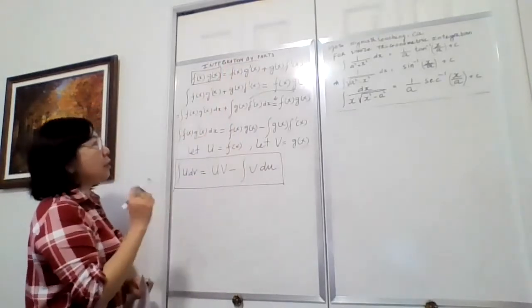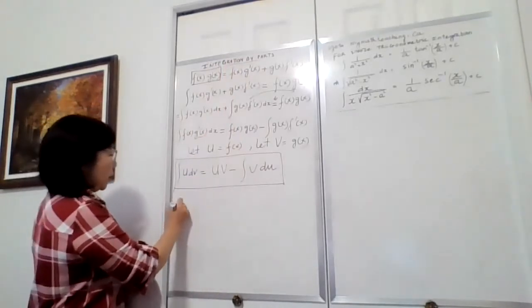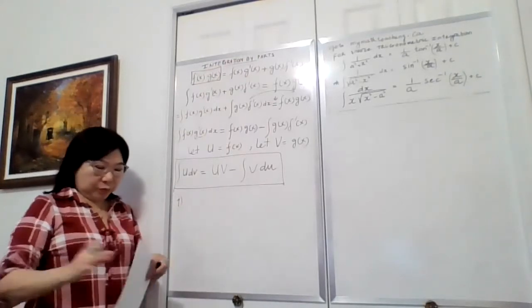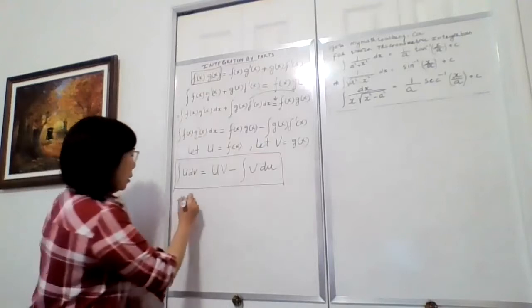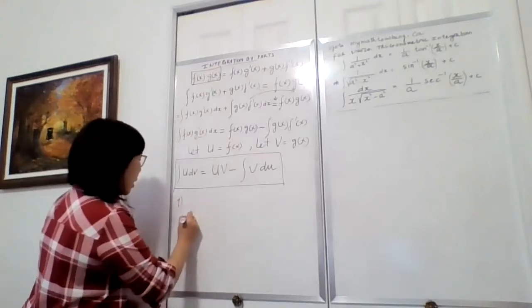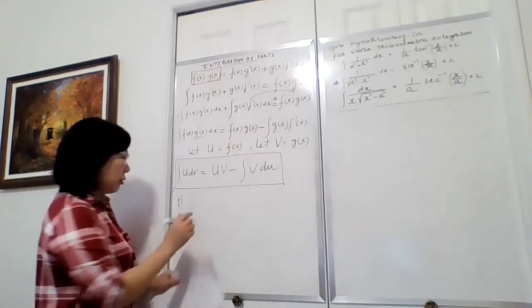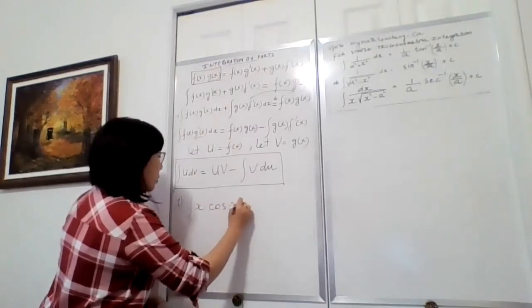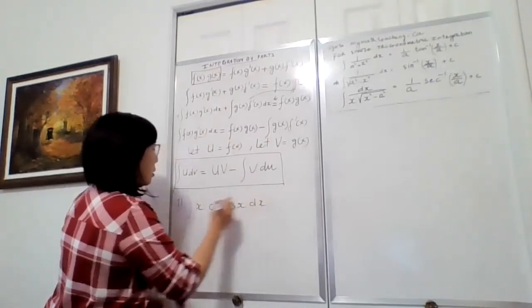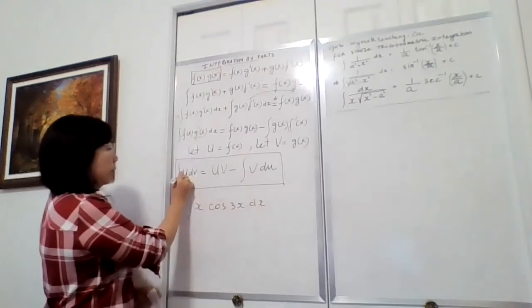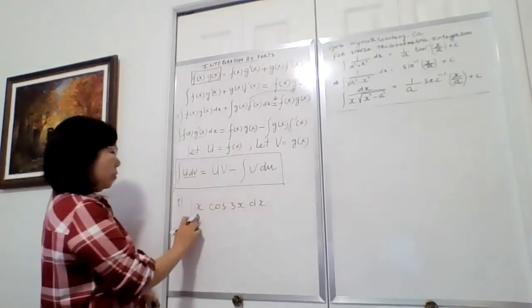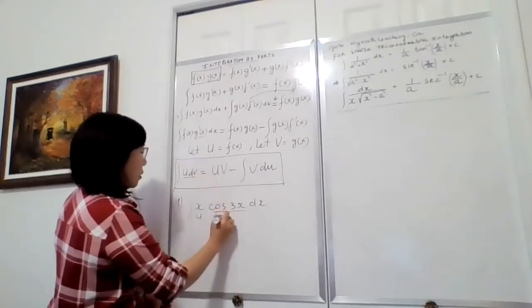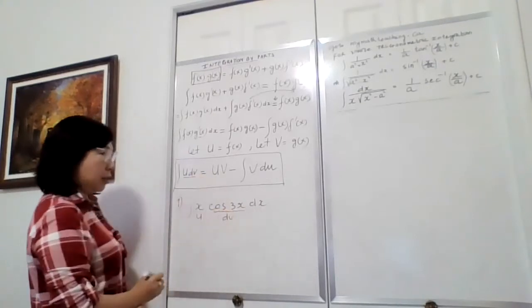Now let me give you an example. For the first question, let's say we have to integrate x times cos(3x) dx. Following this formula, I identify u and dv. I call x as u and cos(3x)dx as dv.